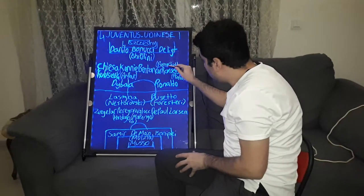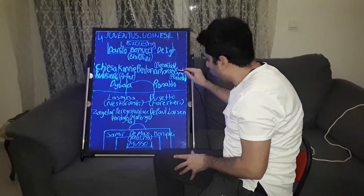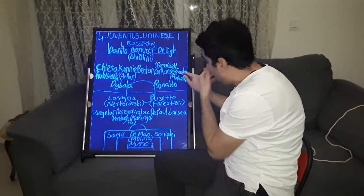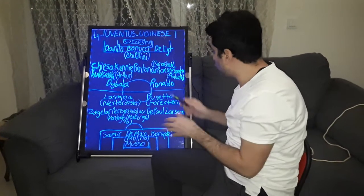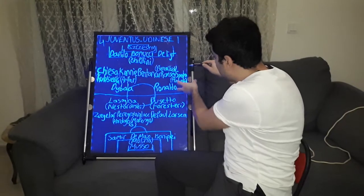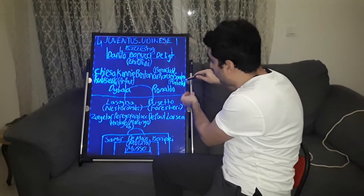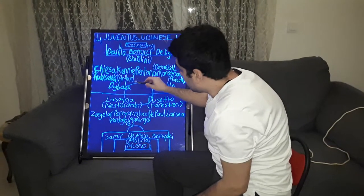For example, in the first goal of Juventus, Aaron Ramsey has stolen the ball from Rodrigo de Paul and he made an assist to Cristiano Ronaldo's goal. And sometimes Sandro supported the attacks from the left.